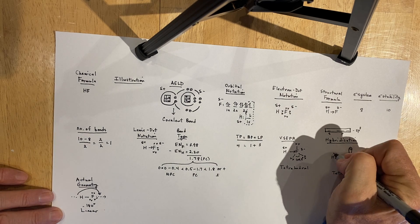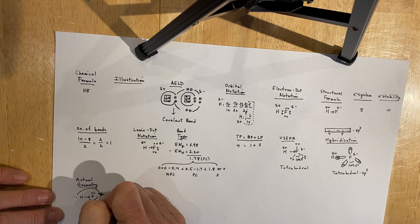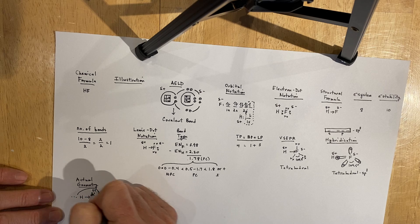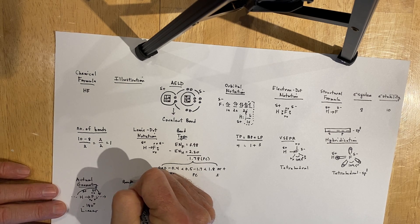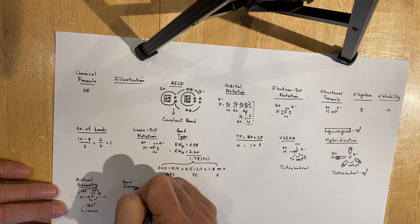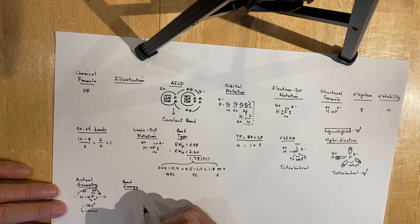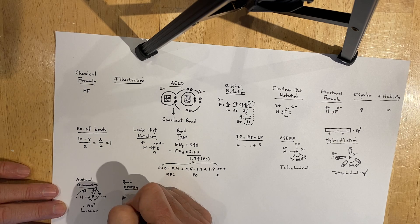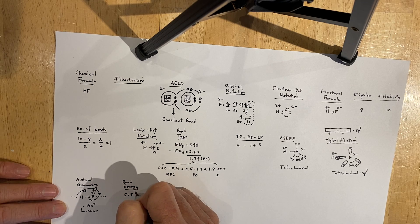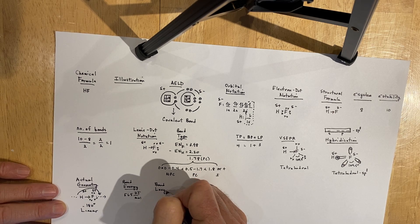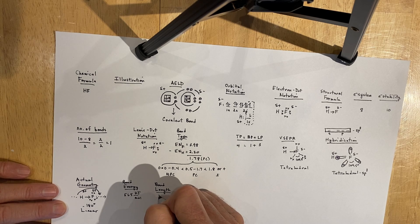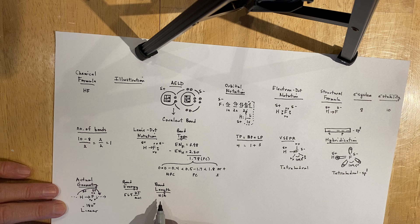We forgot to show separation of charge on those diagrams. On each molecule you create or diagram, show separation of charge in the direction of electron pull. The bond energy for HF is 565 kilojoules per mole. The bond length I don't have a value for right now, so you can look that up on the internet or in tables.